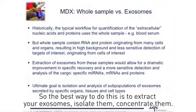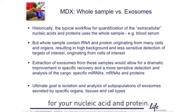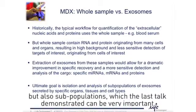So the best way to do this is to extract your exosomes, isolate them, and concentrate them. That way you'll be able to do a more sensitive detection for your nucleic acid and protein. In addition, pull them out and be able to look at the total exosome fraction, but also subpopulations, which the last talk demonstrated can be very important.